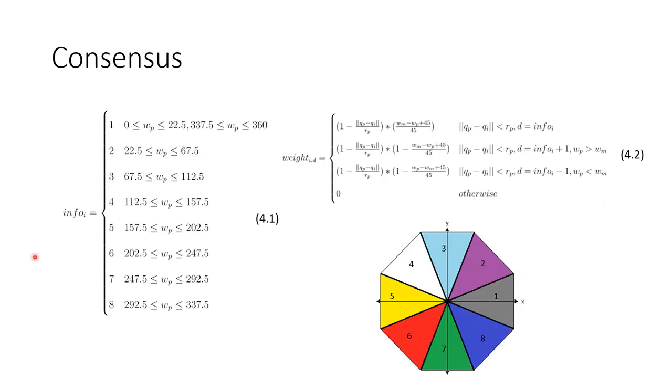For the consensus component, agents have to learn some info and some weight for each predator. The info is determined by these eight discretized directions, and the weight is determined by how close the measured direction is to the center of each of these directions.